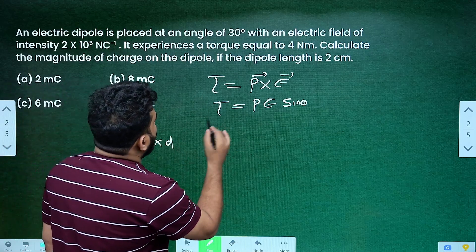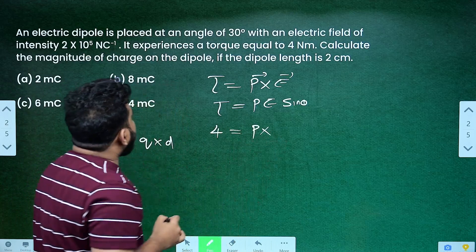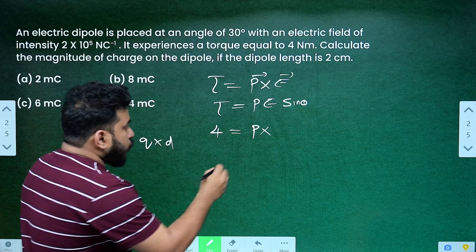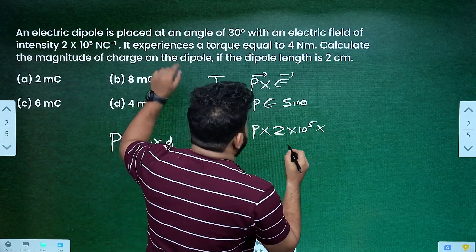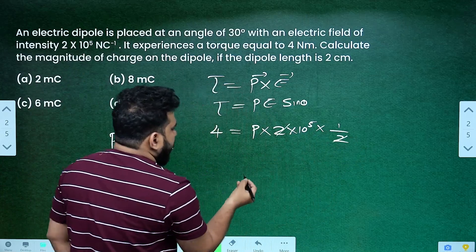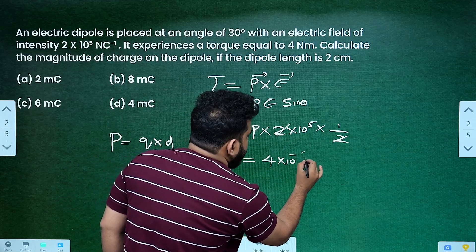So, we have the torque equation. Torque value is 4 equals p into e. What is the value of electric field? 2 into 10 raised to 5 into sin 30. Sin 30 value is 1 by 2. So dipole moment is equal to 4 into 10 raised to minus 5.